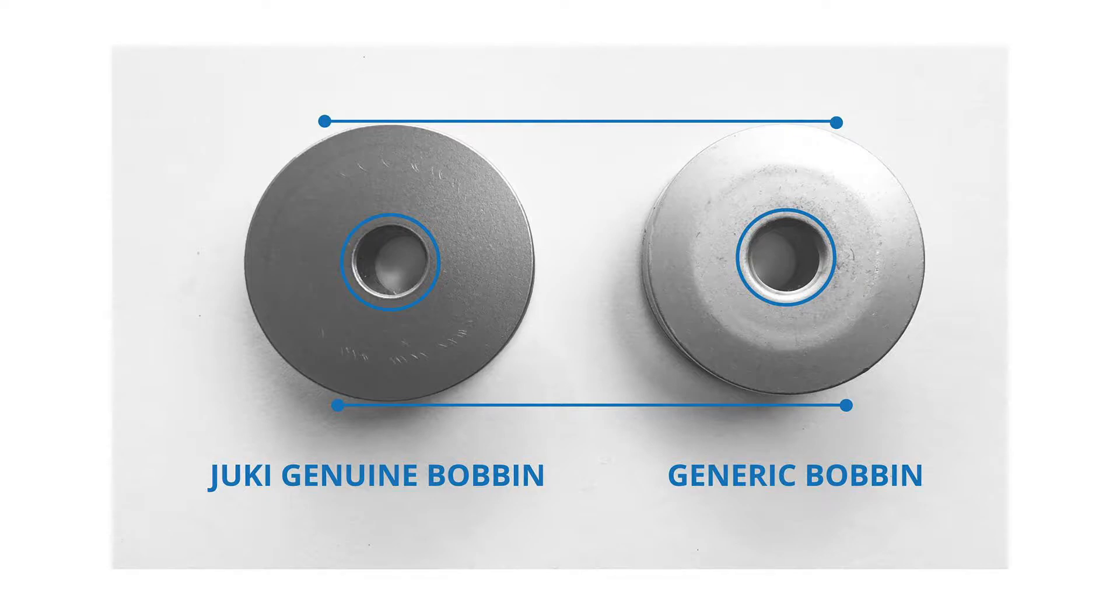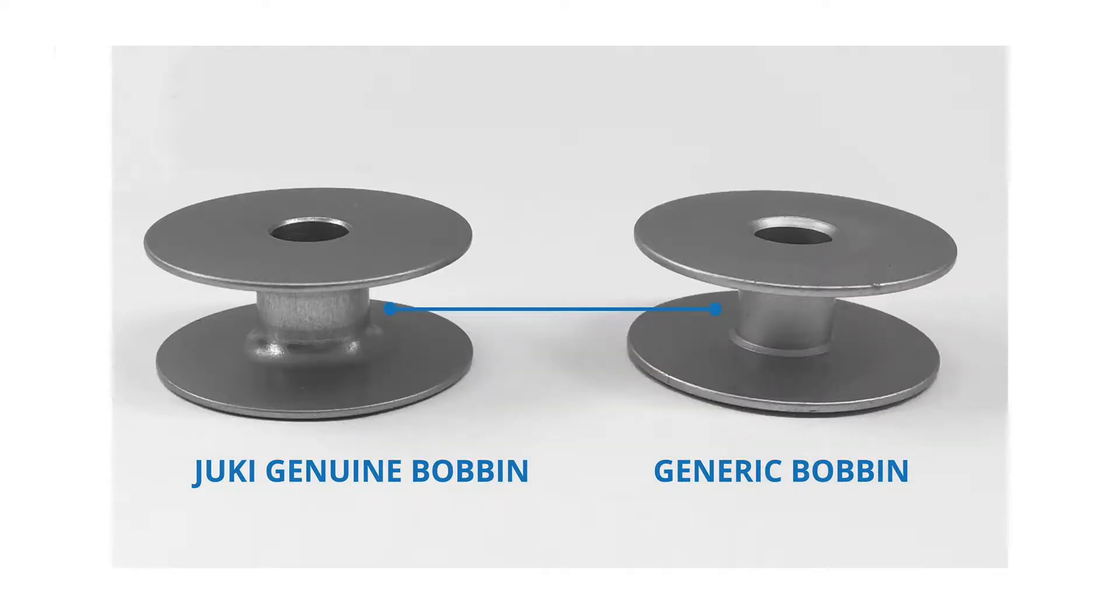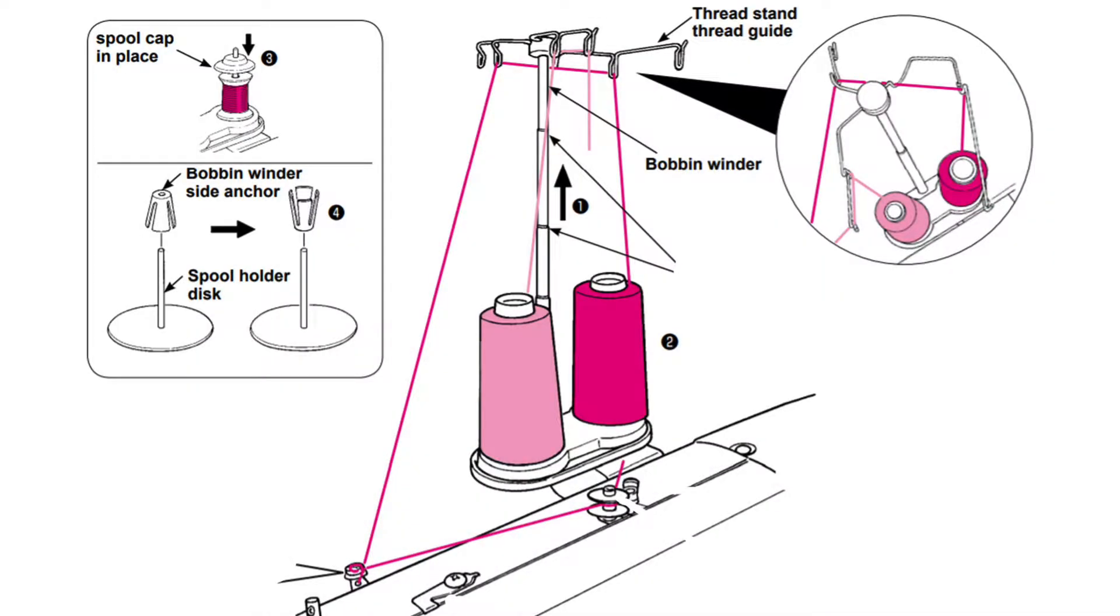Having genuine bobbins ensures fewer issues with your tension and stitches, and creates a smoother quilting experience. Before we wind the bobbin, we'll reference our manual which gives us step-by-step instructions and illustrations.